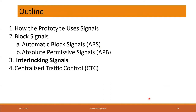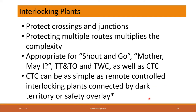Let's move to interlocking signals. An interlocking plant involves a crossing or a junction, and an interlocking signal protects the crossings or junctions. The more routes you put in a crossing or junction, the more it multiplies the complexity of the signaling. It's appropriate for shout-and-go, mother-may-I, and all the other operating schemes. I'm going to look at interlocking plants first because CTC can be as simple as a remote controlled interlocking plant connected by dark territory or safety overlay.